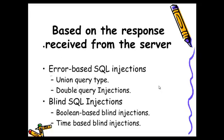Now, based on the response received from the server, there are also two different types. Number one is error-based SQL Injection. It has also two main subtypes like union query type and double query injection.